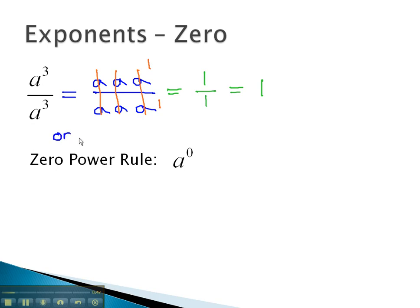However, we could have also simplified it, a cubed over a cubed, using the quotient rule where we subtracted the exponents. A to the 3 minus 3 is a to the 0.